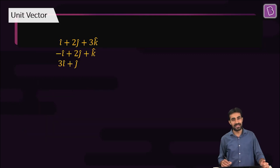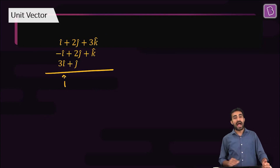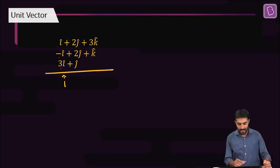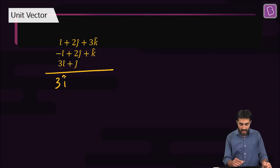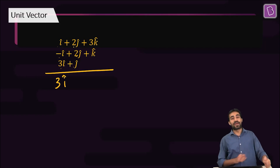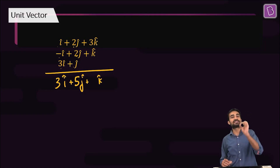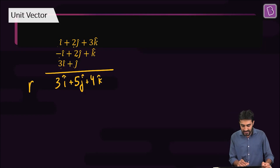To find the resultant, let's add the three vectors. For the i-cap term, we add one plus minus one plus three, giving us three i-cap. For the j-cap terms, two plus two plus one gives us five j-cap. For k-cap, three plus one plus zero gives us four k-cap. So the resultant r vector is 3i-cap plus 5j-cap plus 4k-cap.